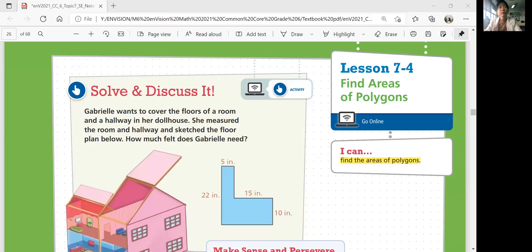In this lesson, we'll be able to find the areas of polygons. Let's start with solve and discuss it. Gabrielle wants to cover the floors of a room and a hallway in her dollhouse. She measured the room and hallway and sketched the floor plan below. How much felt does Gabrielle need? Felt is like a cloth that you need to cover the floors.